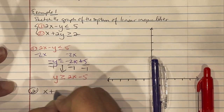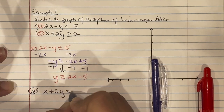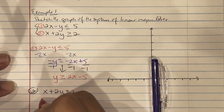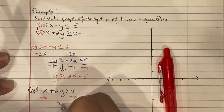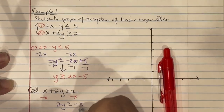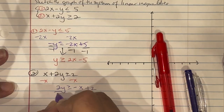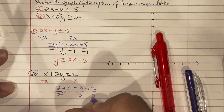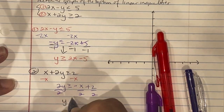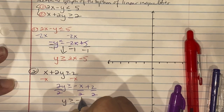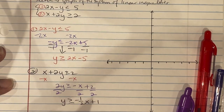For equation 2, start with x plus 2y is greater than or equal to 2. Subtract x to get 2y is greater than or equal to negative x plus 2. Then divide everything by 2 — we're not dividing by a negative, so we don't change the direction — giving us y greater than or equal to negative one-half x plus 1. Now we have our two equations.